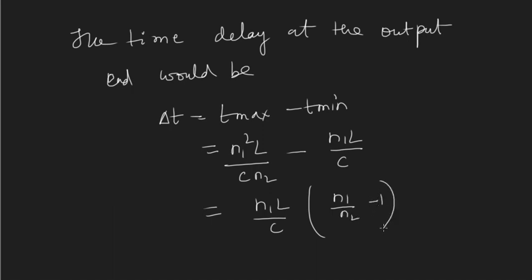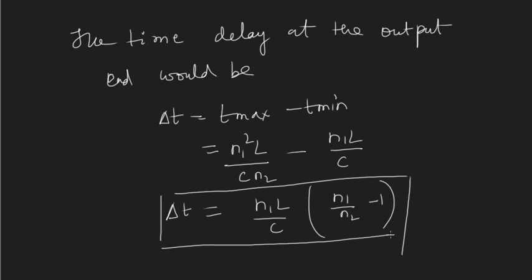So the final expression for pulse dispersion in a step index multimode fiber is ΔT = (n1·L/c) × (n1/n2 − 1). This is how much pulse dispersion takes place in step index multimode fiber. These fibers have a large number of applications, but we have to decide which type of fiber to use for a particular application and how to optimize dispersion and losses occurring in the fiber in order to get better output.